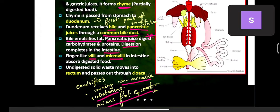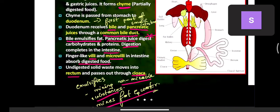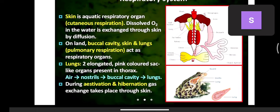Finger-like villi and microvilli in the intestine absorb the digested food. Undigested solid waste moves into the rectum and then passes into the cloaca, the final opening in frogs. One hundred percent of food can never be digested — undigested food passes out through the cloaca.